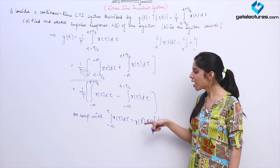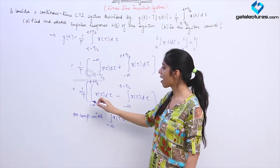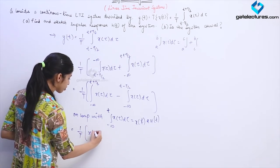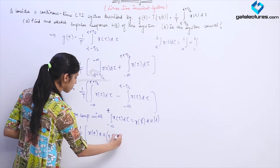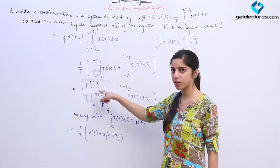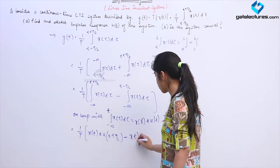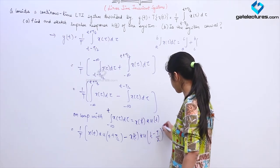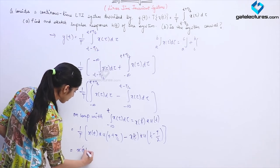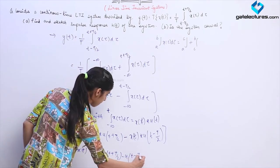Whenever I convolve a signal with u(t) I obtain the running integral of the signal from minus infinity to t. Since I now have an integral up to t + T/2, this corresponds to convolution of x(t) with u(t + T/2). Similarly, the second term is convolution of x(t) with u(t − T/2). Using the distributive property of convolution, this equals x(t) convolved with (1/T)[u(t + T/2) − u(t − T/2)].